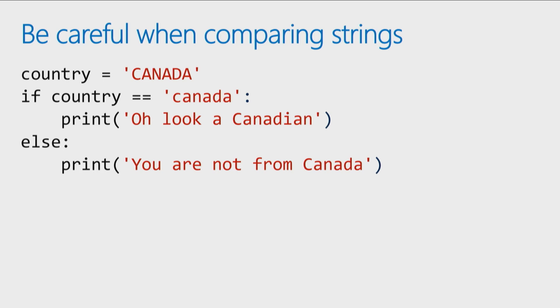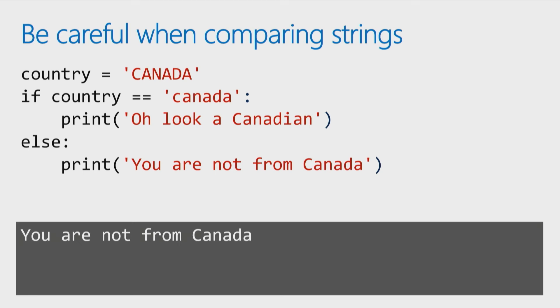Be careful when you're comparing strings. They'll get you into trouble. If you run this code, I'm just trying to see if somebody's a Canadian or not. I ask what country somebody's from, and they type in Canada, and I say if the country is equal to, remembering that double equal sign means is equal to, Canada, then print, oh look, a Canadian. And I set country to Canada, but it comes back and gives me, no, you are not from Canada. What went wrong? String comparisons are case sensitive. If one's in uppercase letters and one's in lowercase letters, then Python's going to say that's not a match.